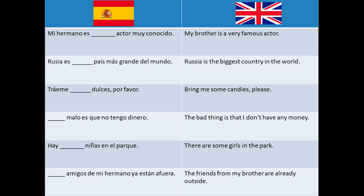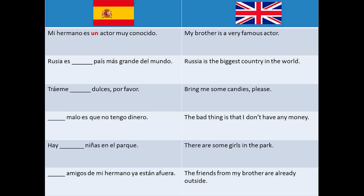To finish this lesson we will do some exercises so we can practice both this and the previous lesson. We must choose a definite or an indefinite article in the right form. First: Mi hermano es ___ actor muy conocido, meaning my brother is a very famous actor. This is something uncertain because there are many actors in the world, so we use the indefinite article — the singular form for the male noun: UN.